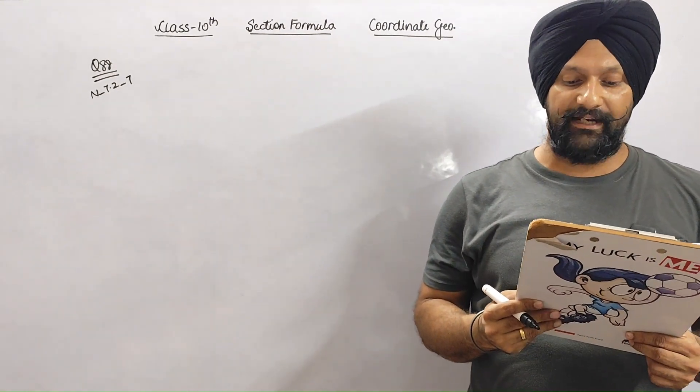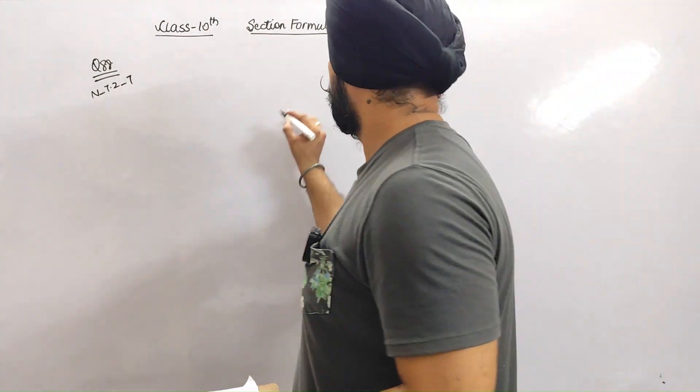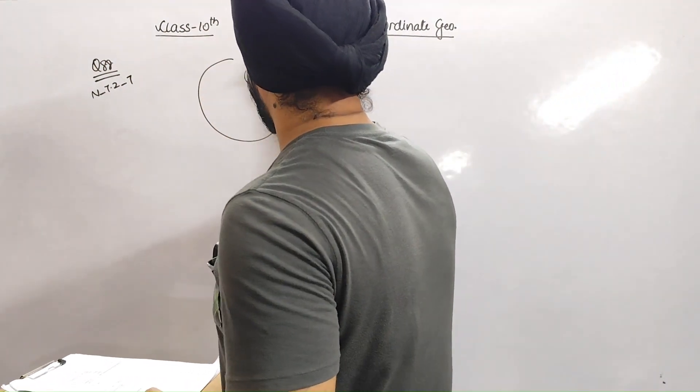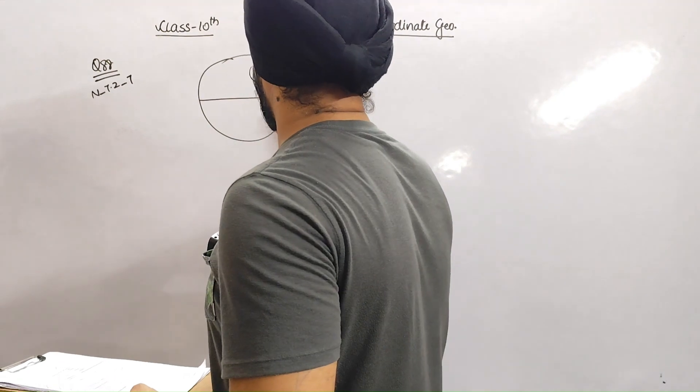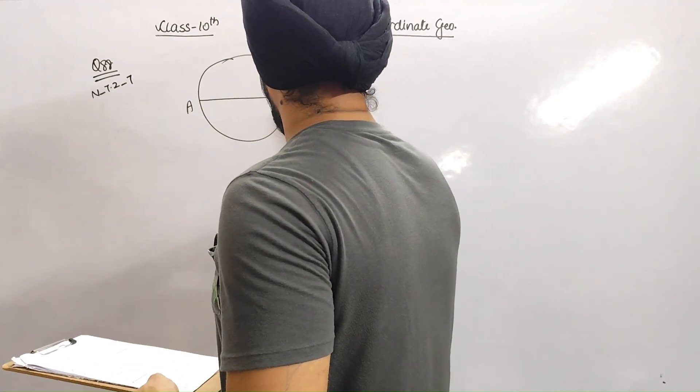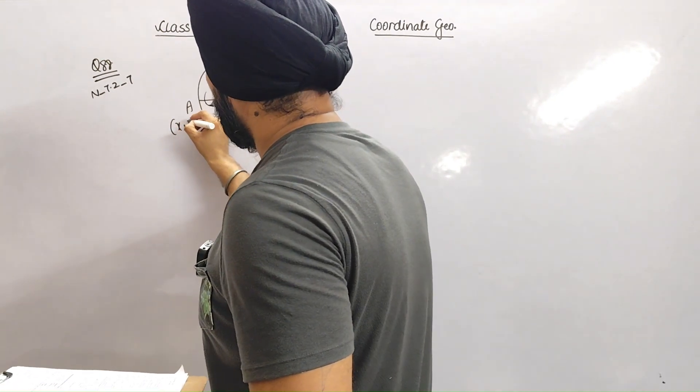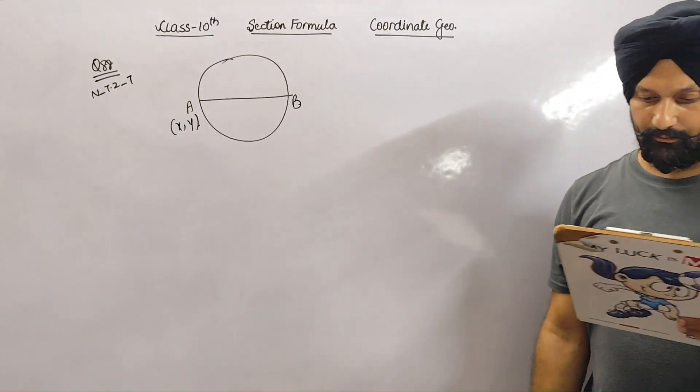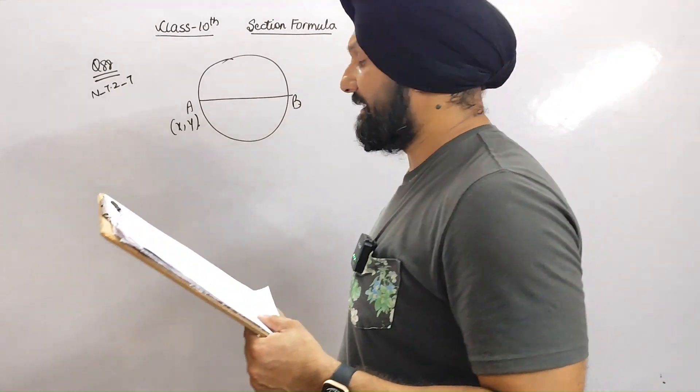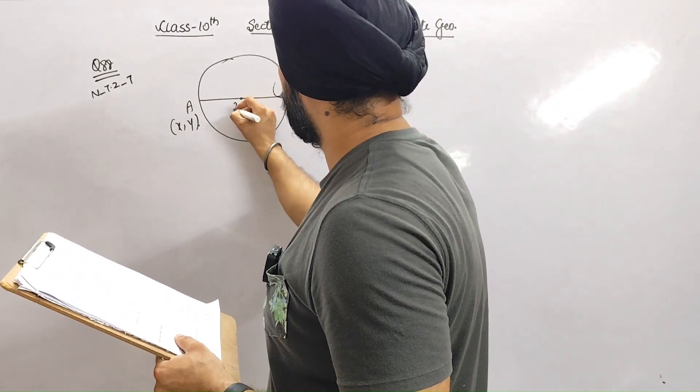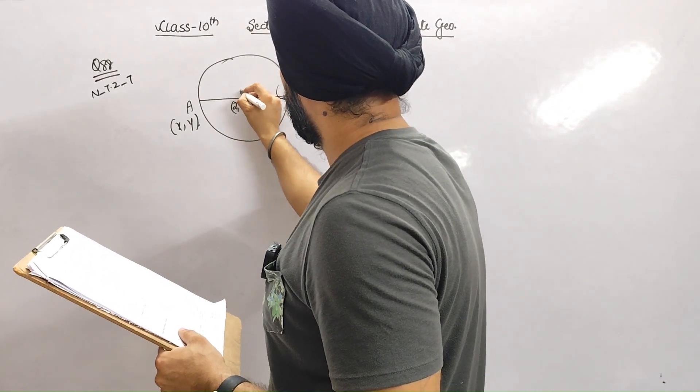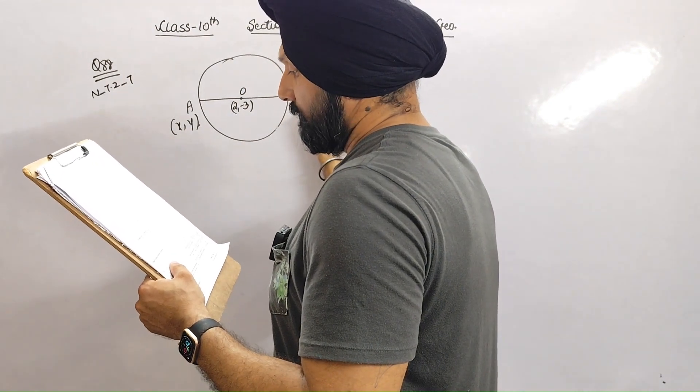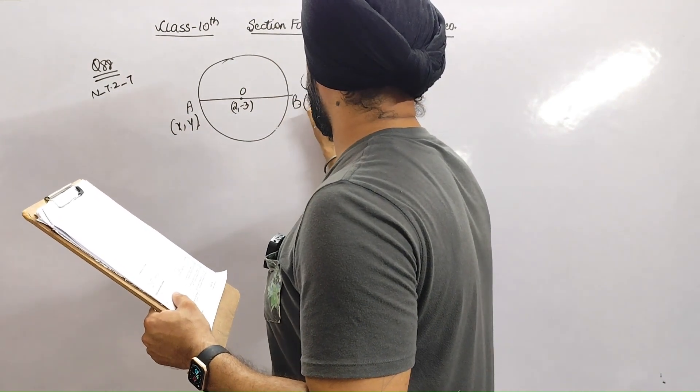Where AB is the diameter of a circle. If this is a circle and AB is the diameter, then if you look at A coordinates, then what do I call x, y? The center is (2, -3) and B is (1, 4).